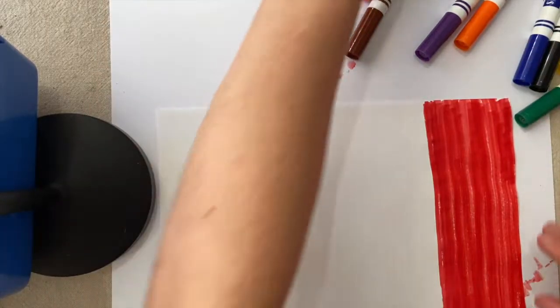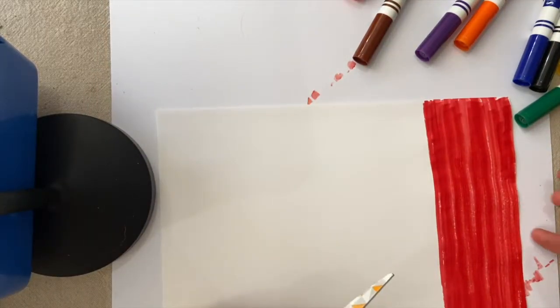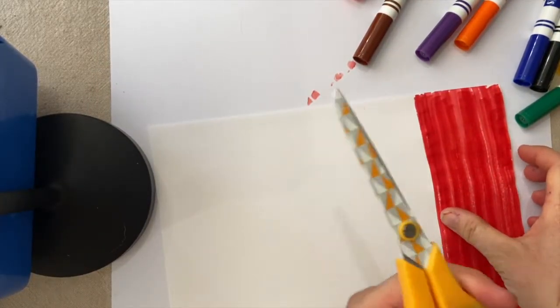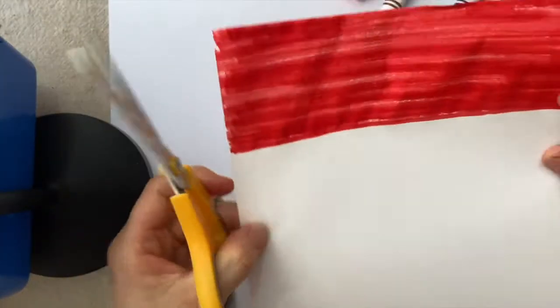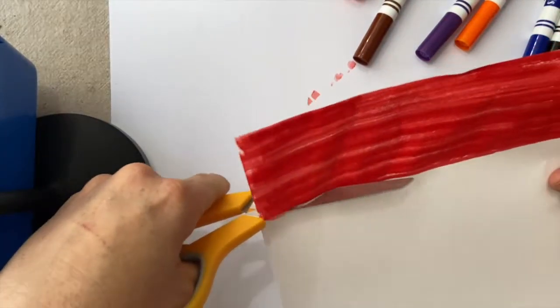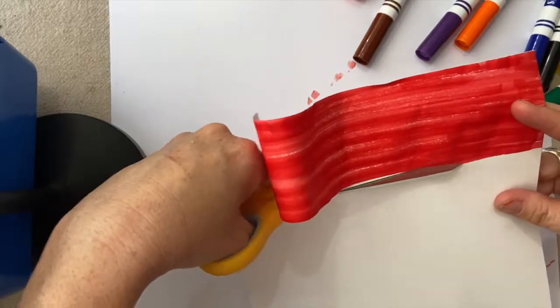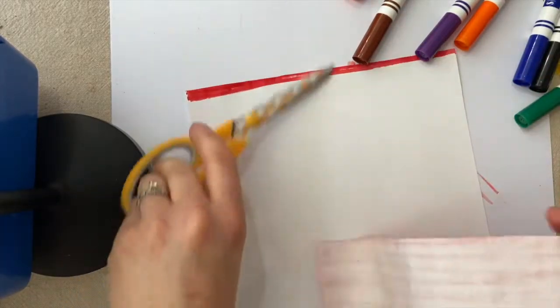Then you're going to find your scissors and we're going to cut that out of our paper. So we'll cut a nice straight line all the way across.